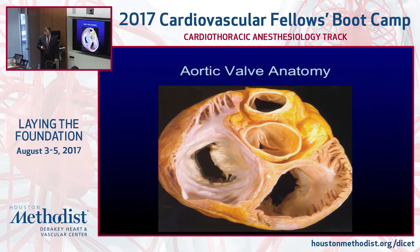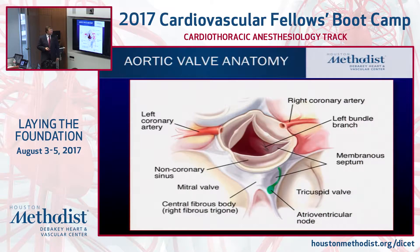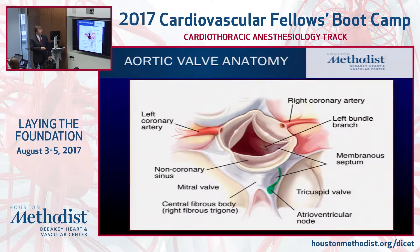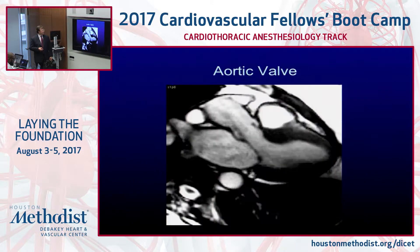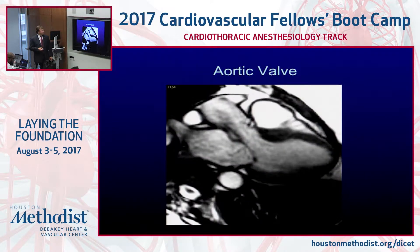A couple of things to point out: we talked several times about where the bundle branch, the bundle of His, and the AV node are. You can see here — we talked a lot about the triangle of Koch and where the tricuspid valve is, and this is where the bundle runs. It's not green like that in real life, but if you know where it is, you're less apt to injure it.